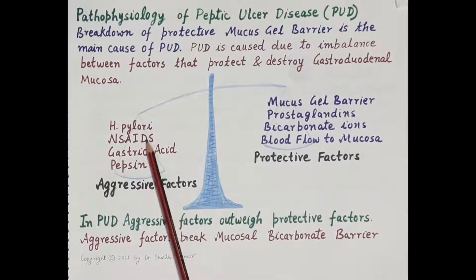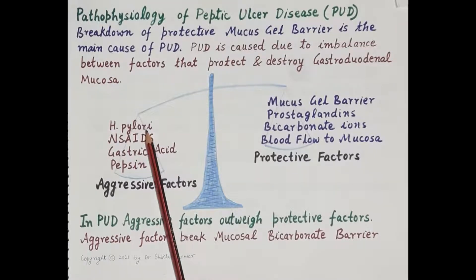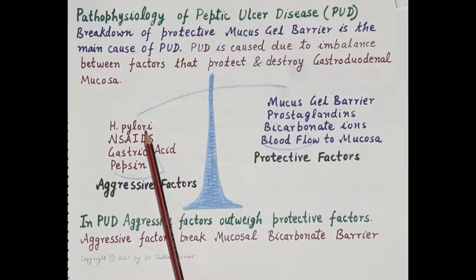Aggressive factors include H. pylori — Helicobacter pylori — a gram-negative bacteria that colonizes the gastric mucosa. Up to 90% of patients with gastroduodenal ulcers test positive for H. pylori. Anti-H. pylori drugs suppress and eradicate H. pylori, and eradication of H. pylori prevents the relapse of ulcers.